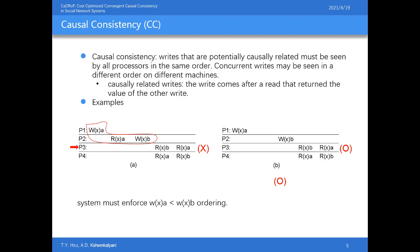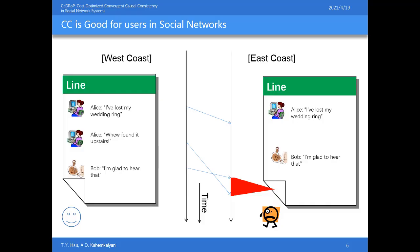In Figure B, the data store is causally consistent because the write operations in P1 and P2 are concurrent. Causal consistency improves user experience because actions appear to everyone in the correct order. Consider this example showing why causality matters on social networks: on the West Coast server, Alice posts, then a few minutes later she comments as a follow-up, and then Bob comments 'I'm glad to hear that.' On the East Coast server, which received replicas from the West Coast, Alice's comment has not yet appeared during the read time — it looks confusing.